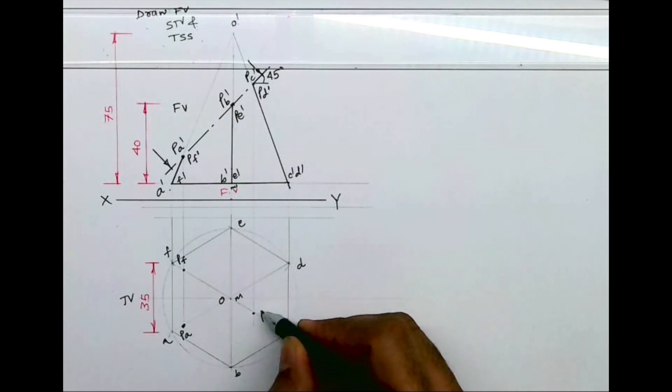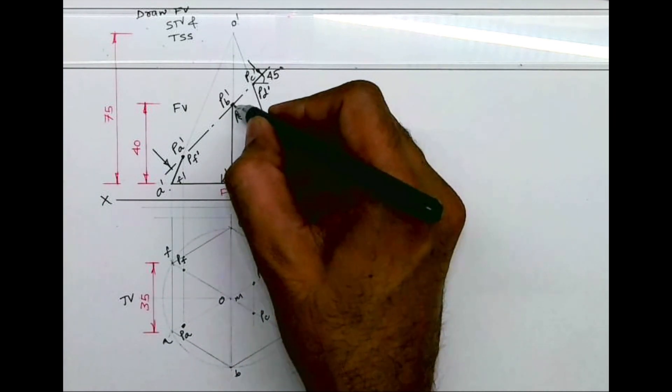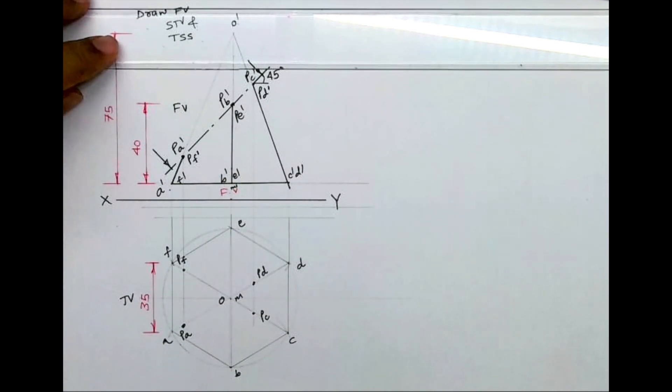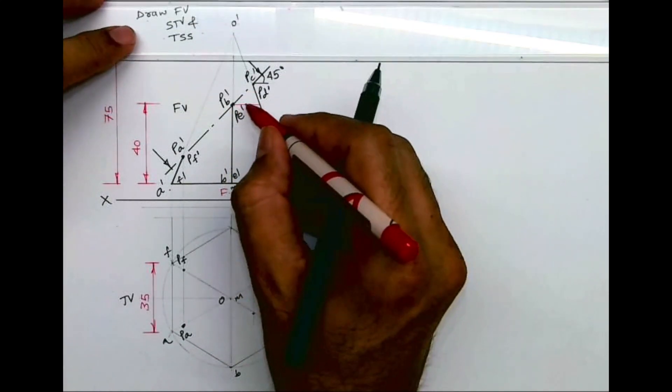On OC, wherever it will cut, that is PC. On OD, wherever it will cut, that is PD. Now, this middle point, you can't project straight down. We can do it with side view, but if we don't have side view right now...